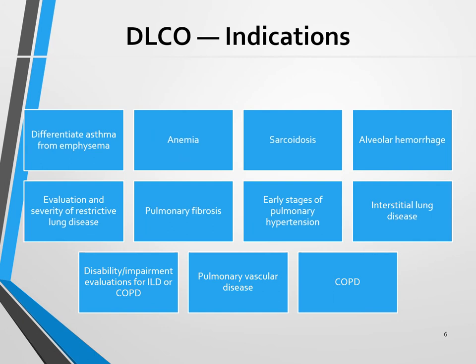Exactly what kind of illnesses and conditions will the DLCO test show? For example, it can differentiate whether someone has asthma, emphysema, or COPD. It can determine anemia. It's a great test for sarcoidosis — looking at the stage and treatment response. It can respond to alveolar hemorrhages, restrictive lung disease, pulmonary fibrosis, early stages of pulmonary hypertension, interstitial lung disease, COPD, and pulmonary vascular disease. This test determines the severity and whether a condition is getting worse or improving.